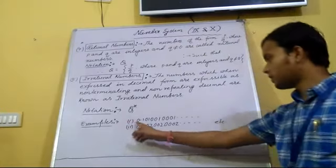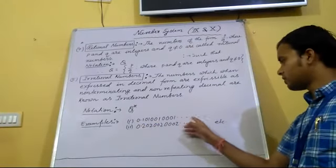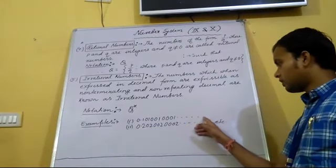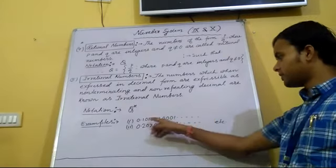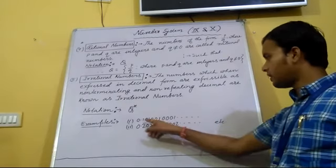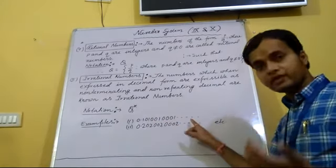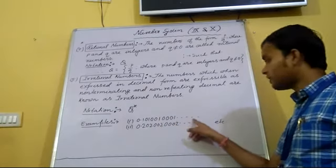Example number 1. Clearly, this is endless that means non-terminating and this is also not repeating. So, this is an irrational number.